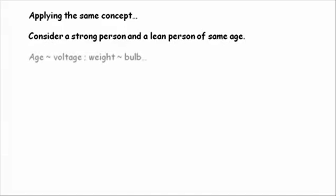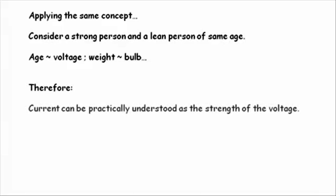Taking the age in this example equivalent to voltage and the weight given to each person equivalent to the light bulb, it can be inferred that the bulb connected to the smaller battery stops glowing comparatively earlier because there is less strength in that battery than the large battery. This strength can be called as current that the battery can deliver. So current can be understood as the strength possessed by the voltage.